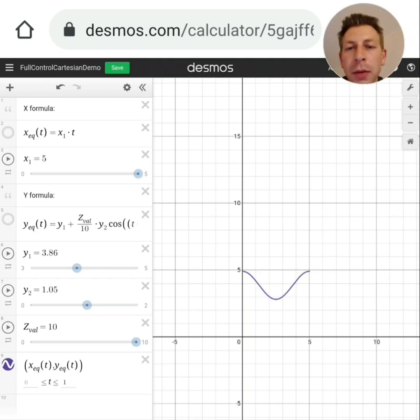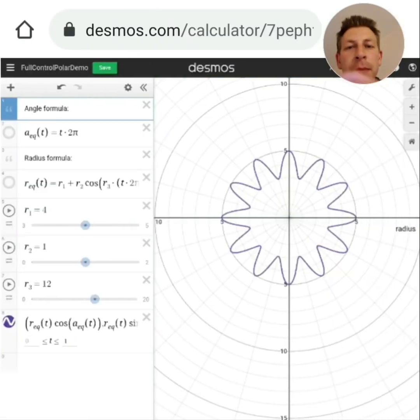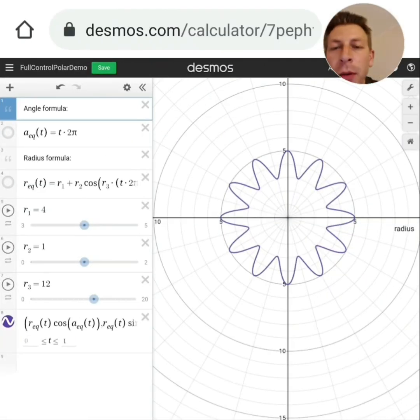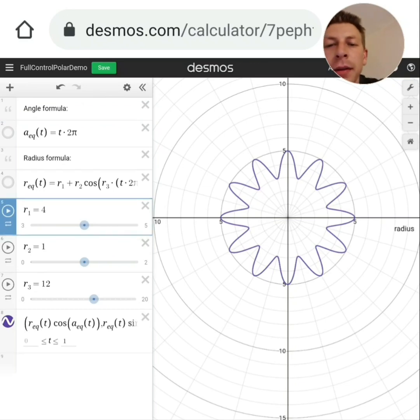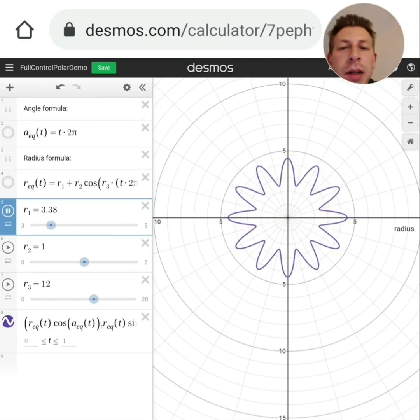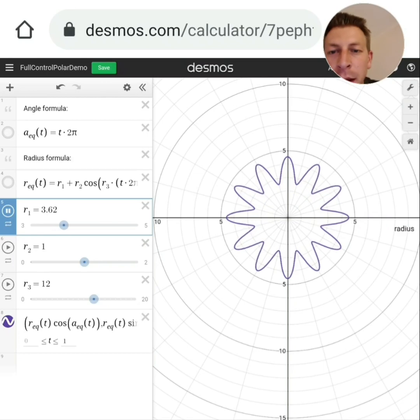So then the same thing for the polar one. We've now got an angle formula as a function of t, radius formula as a function of t, and they're being put together. Again we can edit these parameters that are in those equations.